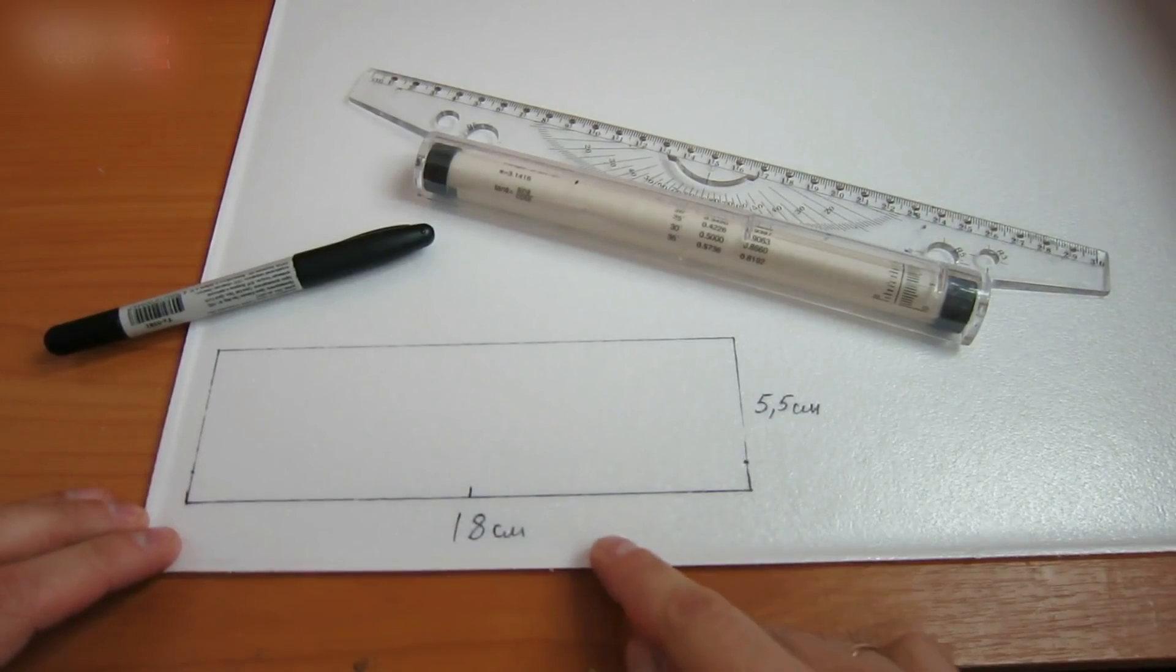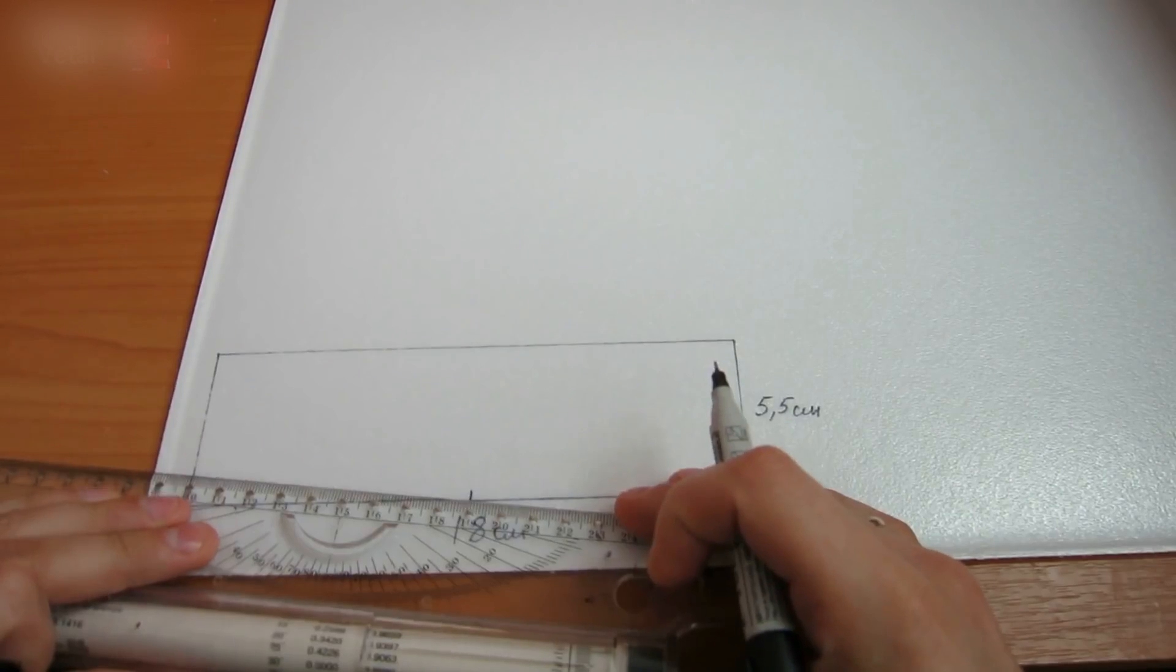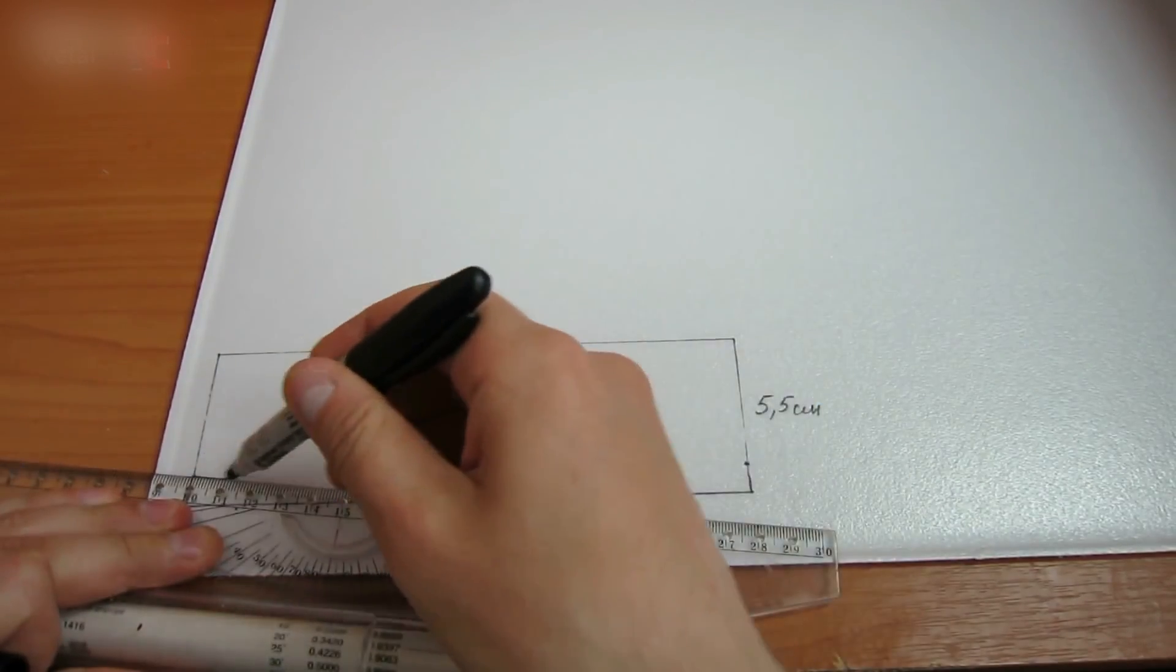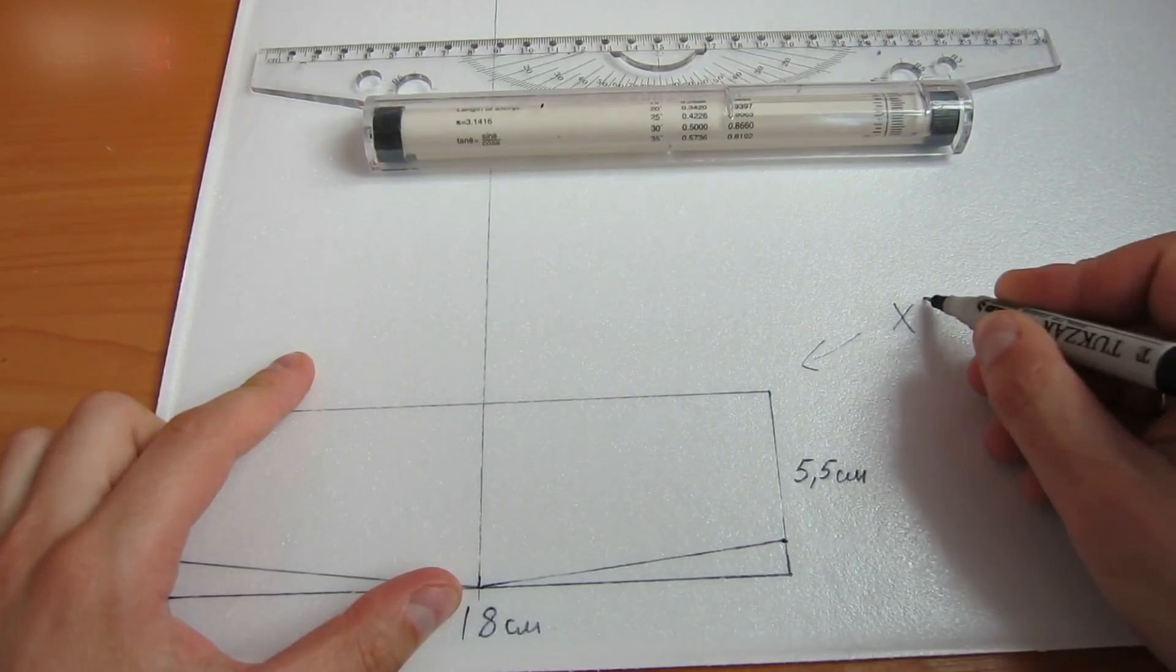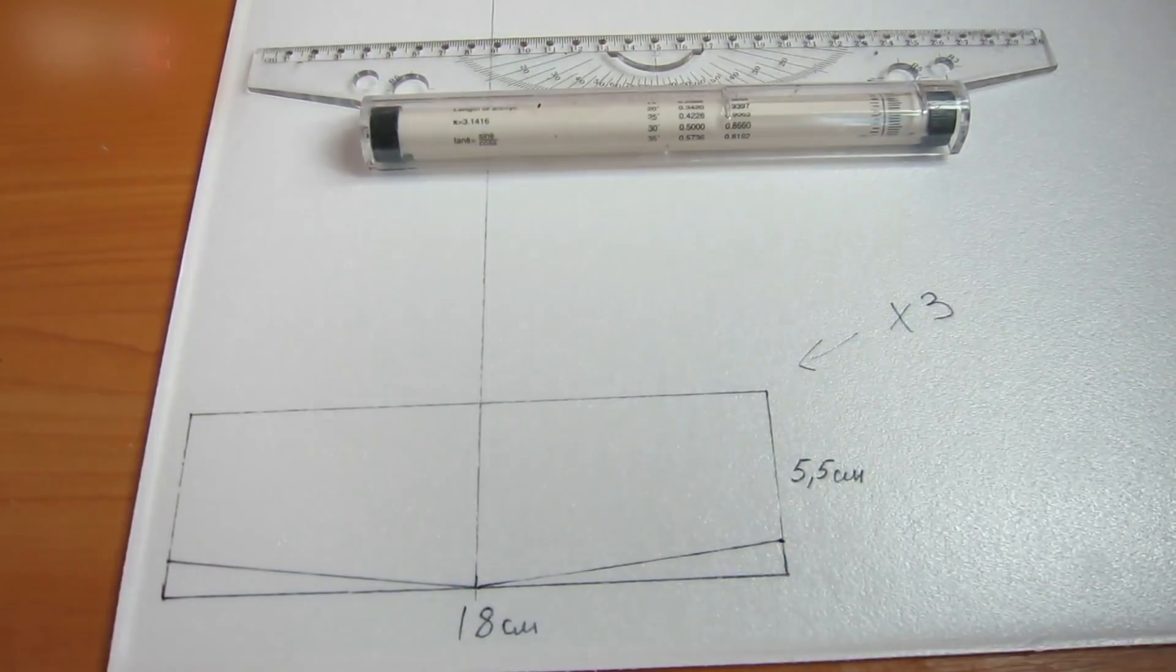Measure an 18 by 5 and a half centimeter rectangle, then measure one centimeter from the bottom edge and draw a line at an angle, like this. We will need three of these rectangles.